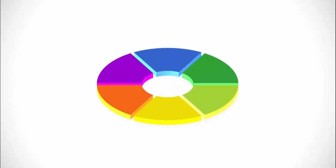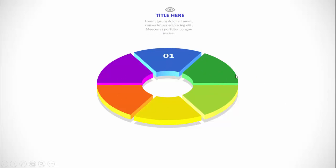In today's tutorial I'm going to show you how to create a six-options infographic slide in PowerPoint. Here I have created an oval shape which is cut into six equal parts, with a different color shading for each option.